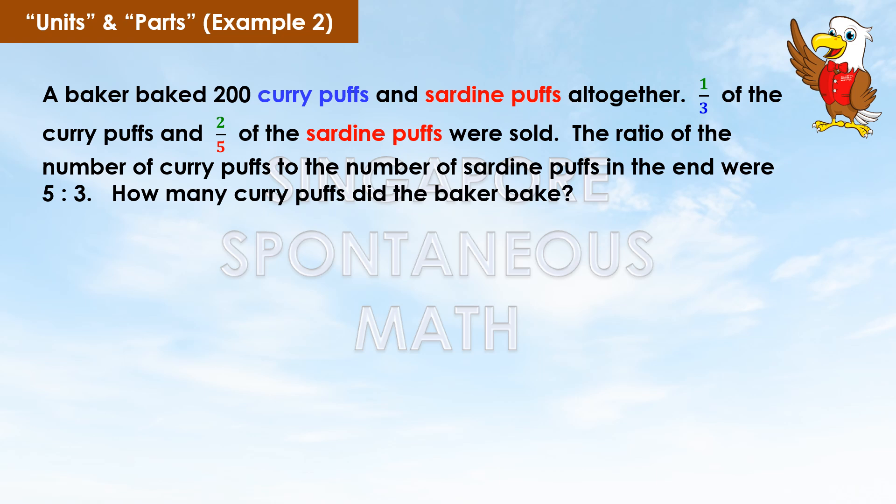A baker baked 200 curry puffs and sardine puffs altogether. One-third of the curry puffs and two-fifths of the sardine puffs were sold. The ratio of the number of curry puffs to the number of sardine puffs remaining was 5 to 3. How many curry puffs did the baker bake?